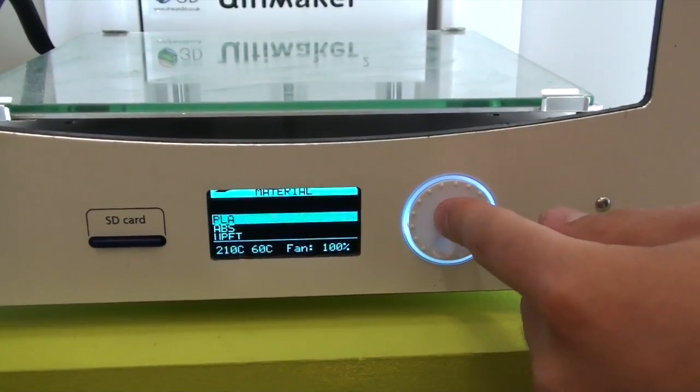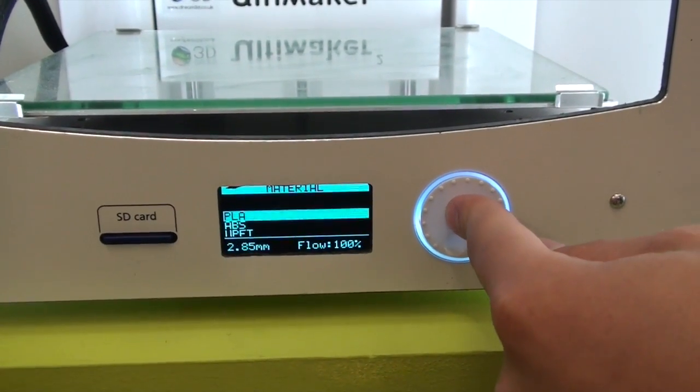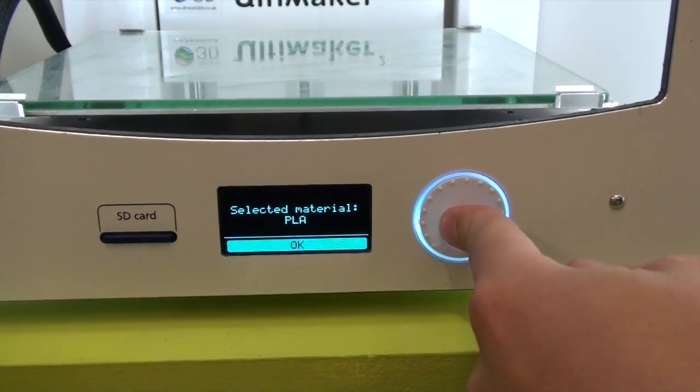And then you want to select the material. In this case we're using PLA. So select PLA. And then OK. And you're ready to print.